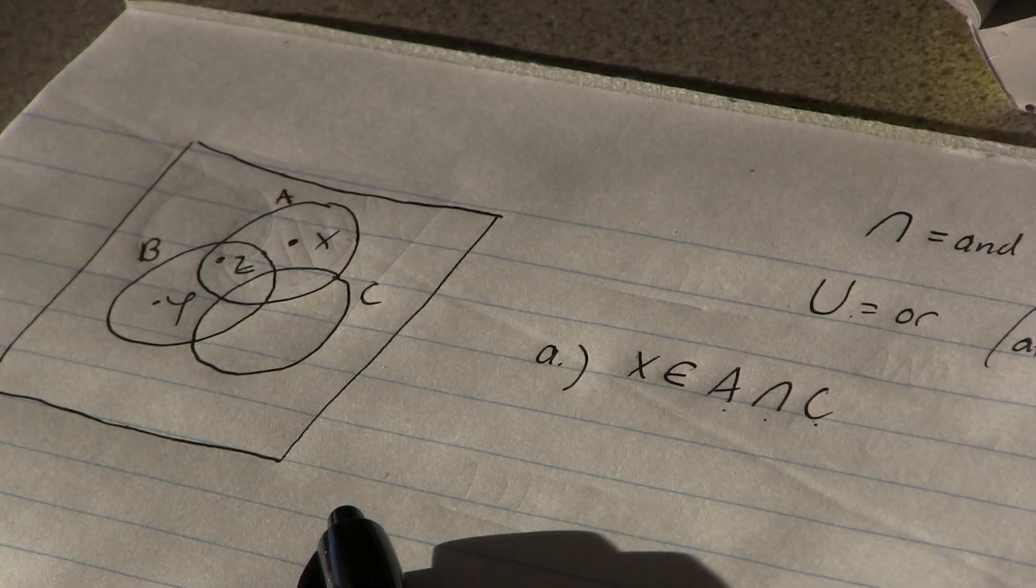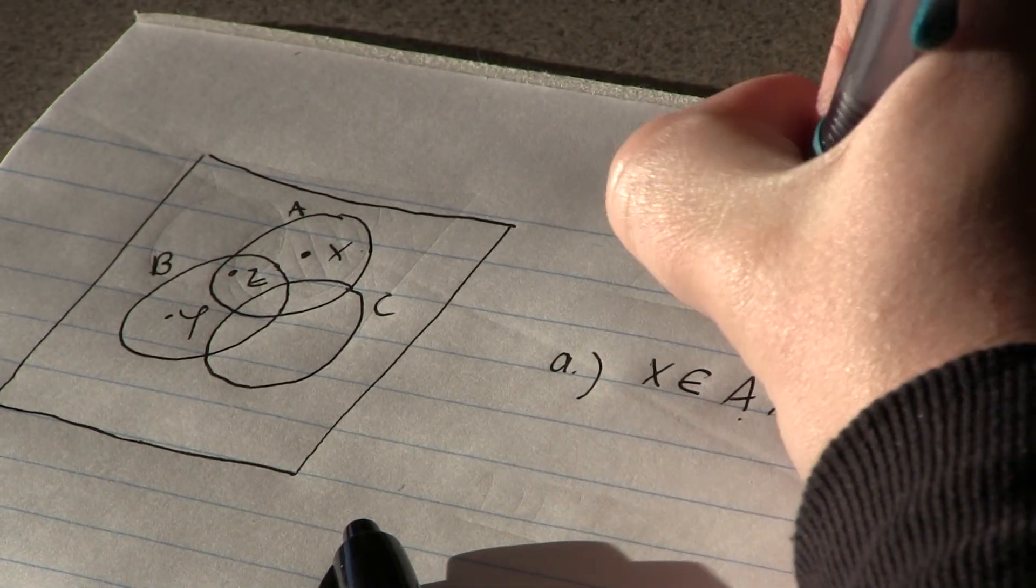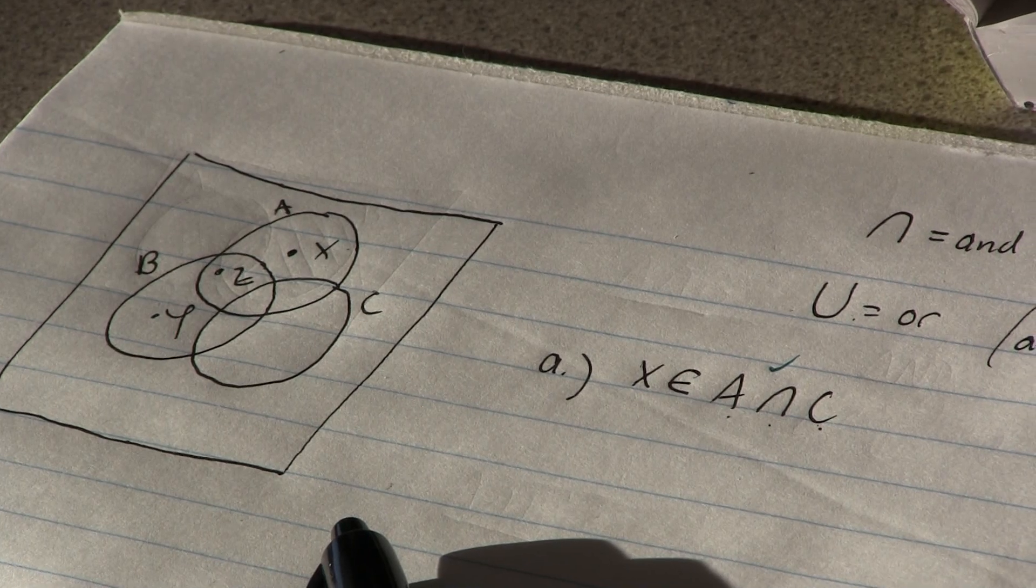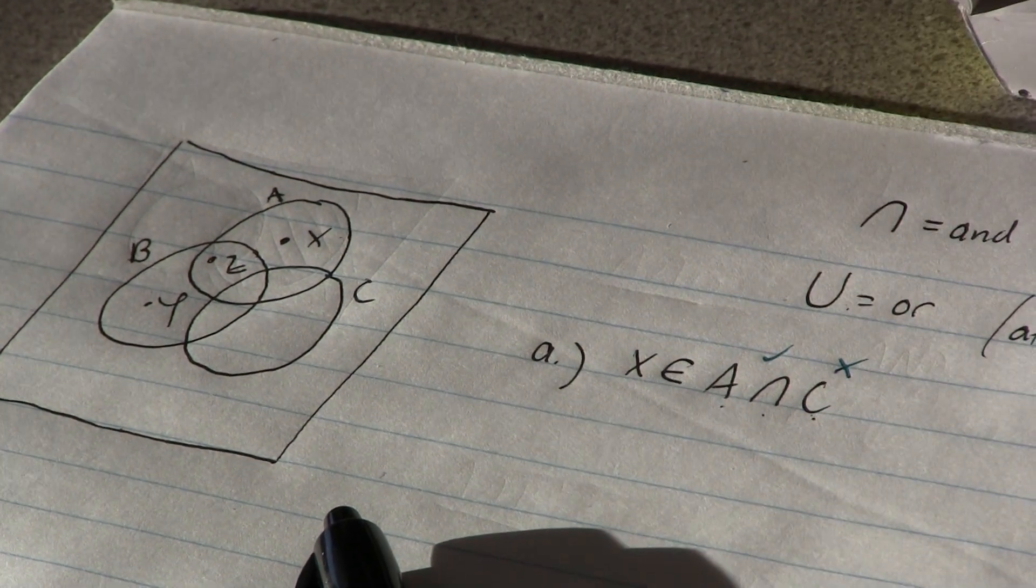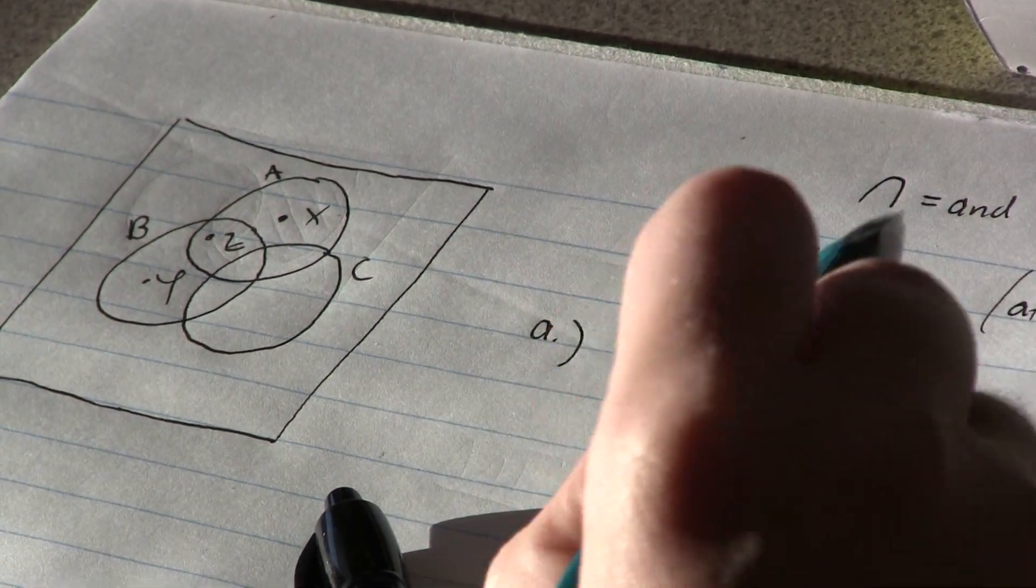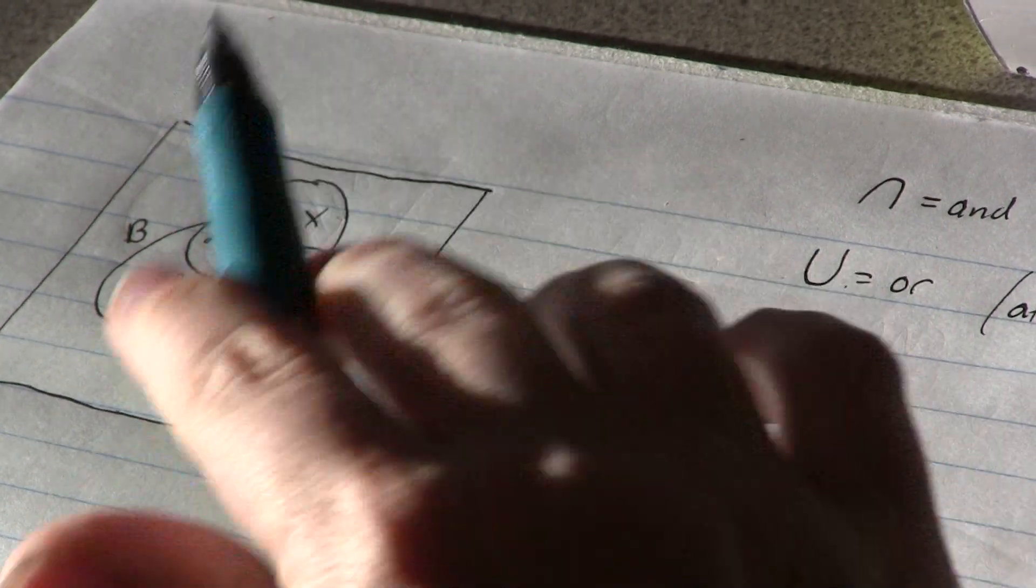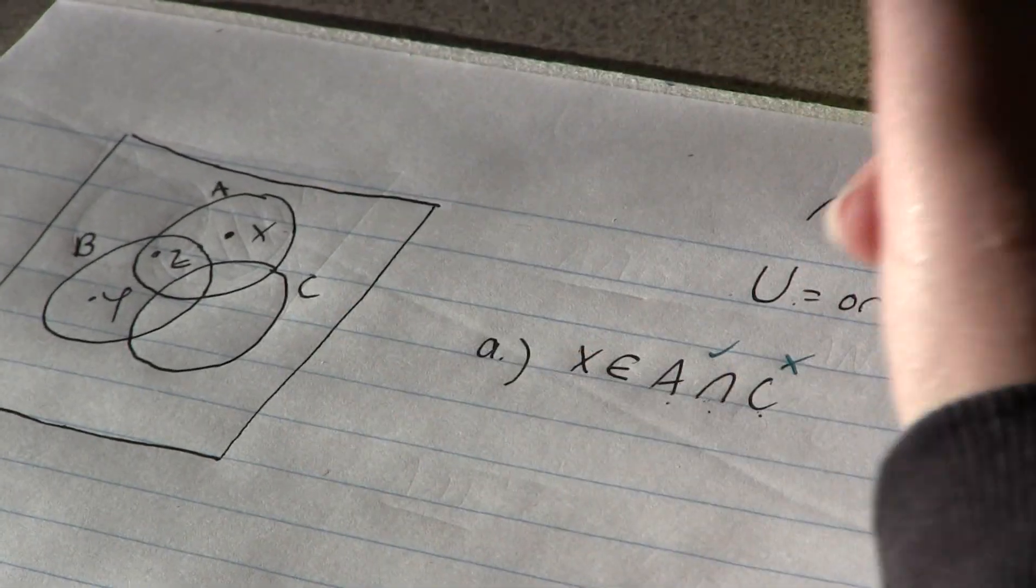I guess I'll put a little check mark. X lives in A but X doesn't live in C, and if this is an intersection it has to be in both. It's only in one, so that's not true. So I will put a false.